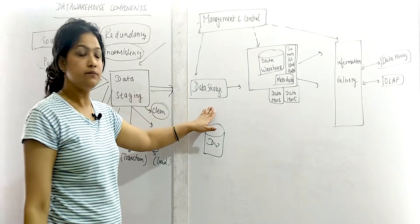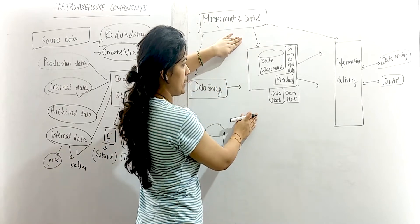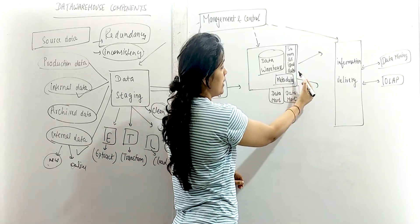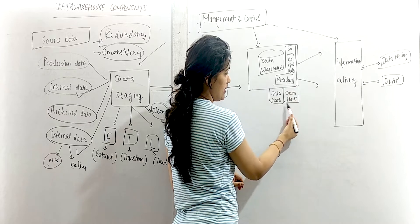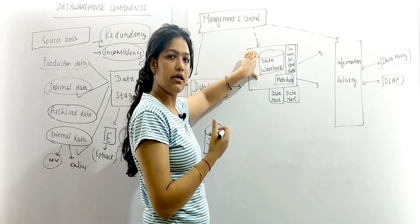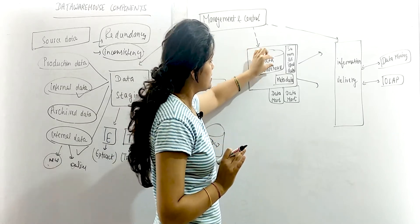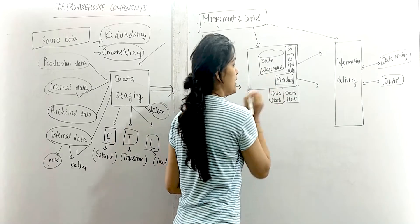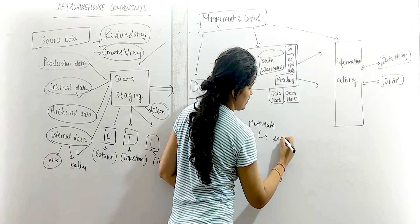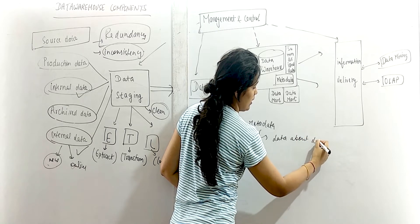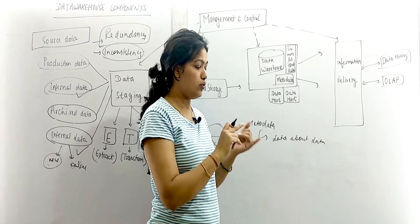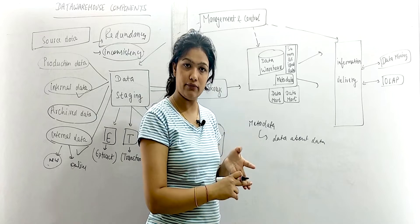After cleaning the data, we store it. Now we will see how we store data inside the data warehouse. The data warehouse contains: summarized data, metadata, and data marts. The data warehouse is simply a collection of the whole, entire data. Metadata is data about data — something we also study in databases.